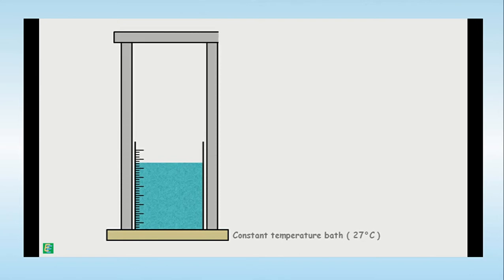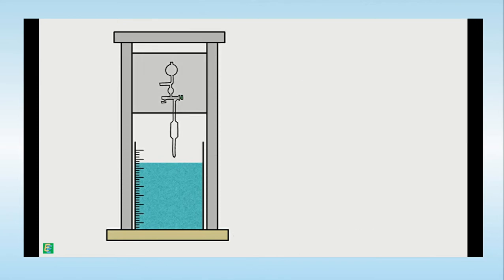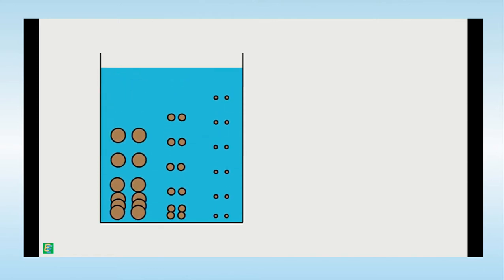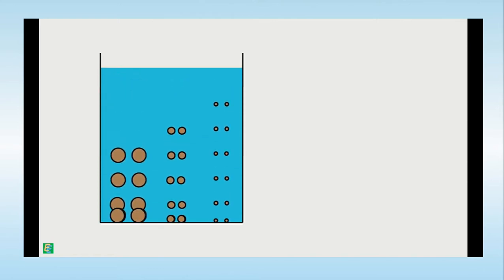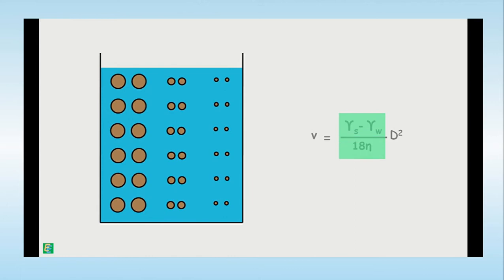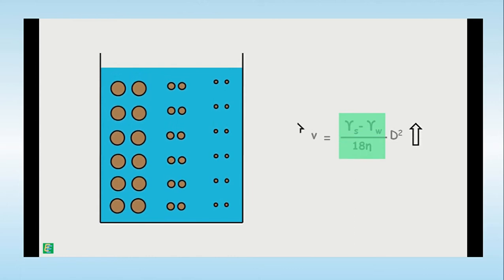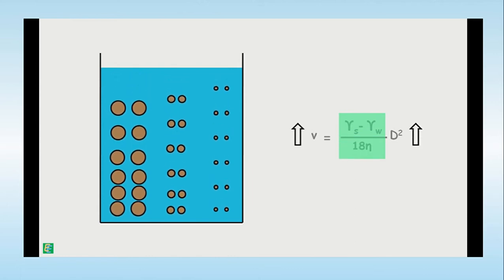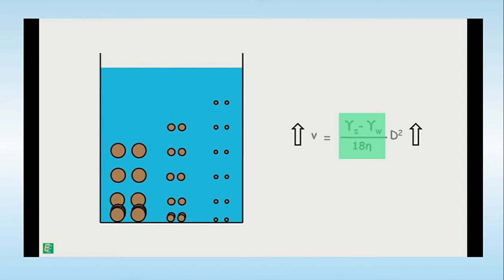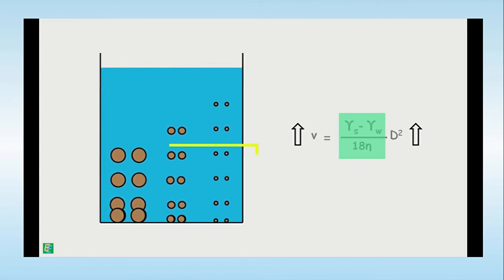The Anderson pipette is then introduced into the suspension after a particular time interval. As shown in the diagram, the bigger particles settle down very fast compared to medium-sized particles, followed by the smaller particles. This illustrates that V is directly proportional to d squared.